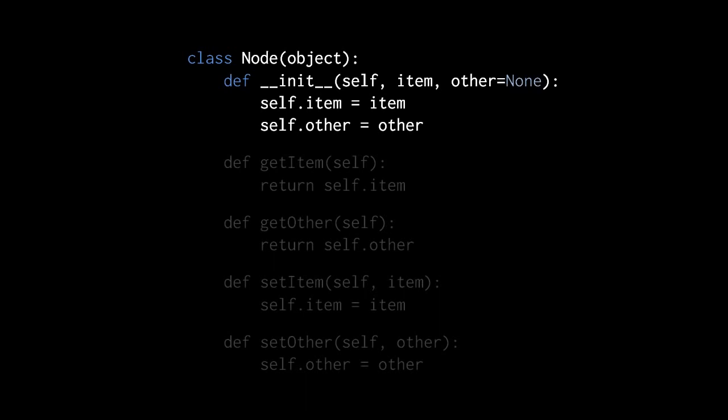We'll give our constructor two other parameters: item, and an optional parameter, other, which by default will have the value none. So when we create a node object but don't provide an argument for the other parameter, by default it will have the value none. In the body of the constructor, we simply give the node object two attributes — item and other — and assign to them the values passed to the item parameter and the other parameter.